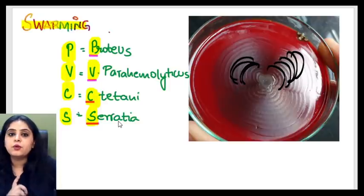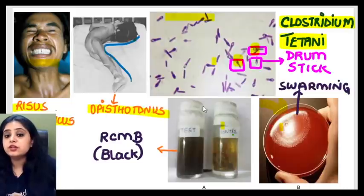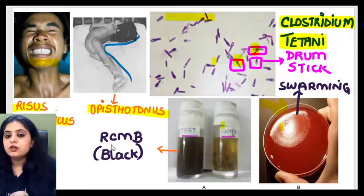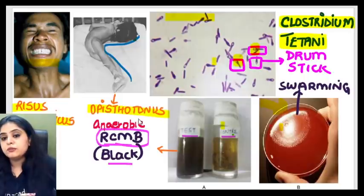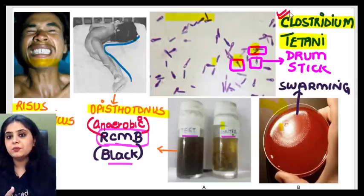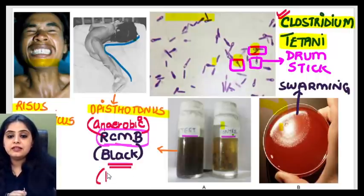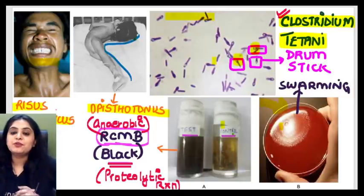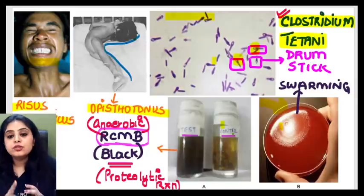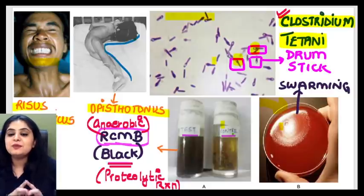The last image shows a culture media — Robertson's cooked meat broth, with a control and test shown. Robertson's cooked meat broth is an anaerobic medium, and since Clostridium tetani is an anaerobe, it grows in this medium. It gives a black color, which is referred to as a proteolytic reaction. Now a small homework: in the comment section, tell me which Clostridium gives a saccharolytic reaction — let's see how many of you are revising your theory well.